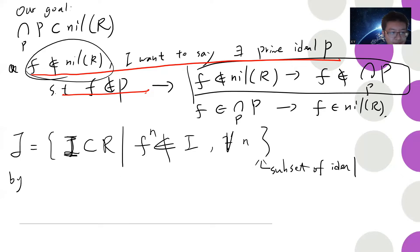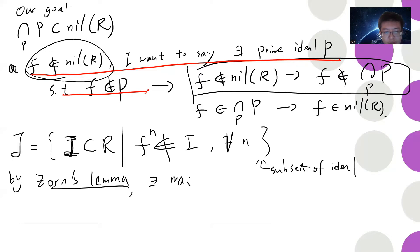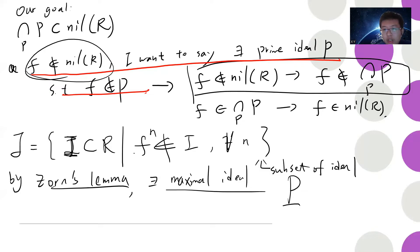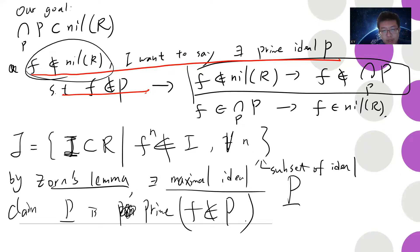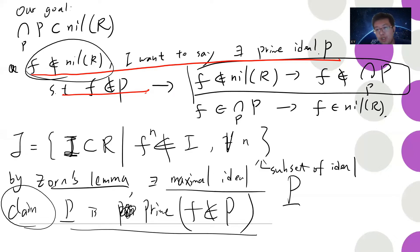By Zorn's lemma there is a maximal ideal P in J. Call this maximal element P. Note that by definition of J, no power of f belongs to P, so in particular f ∉ P. We claim that P is a prime ideal.